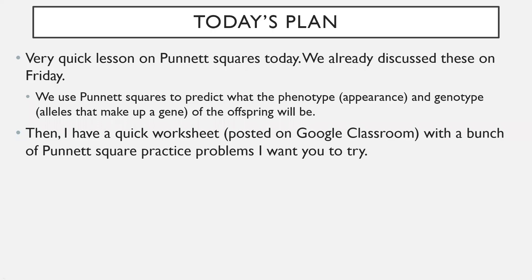Today's plan: we're going to do a very quick lesson on Punnett Squares. We've already discussed these on Friday. We use Punnett Squares to predict what the phenotype — in other words, the appearance — and the genotype — or in other words, the alleles that make up a gene — of the offspring will be. When two parents create an offspring, we want to use a Punnett Square to predict what kind of genes are going to be represented in that offspring.